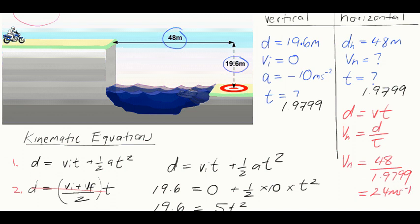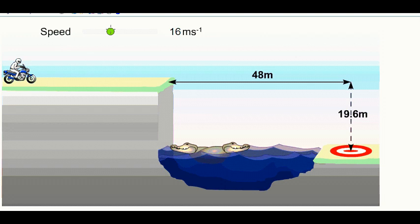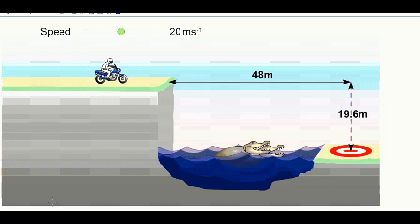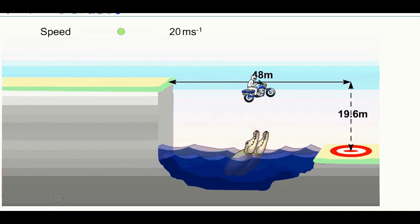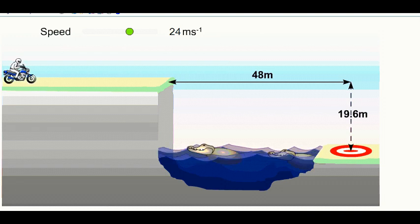Now we can do a quick test. So we crank up our speed to 24 meters per second. Actually, we'll try a lower speed first so you can see what happens. At 20 meters per second, yep, down by the crocodiles. Move it up to 24 meters per second and we should safely hit the target. Perfect.